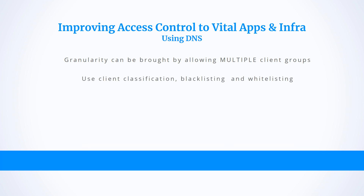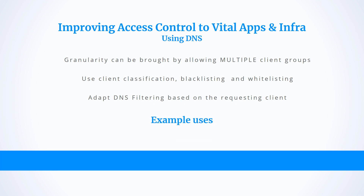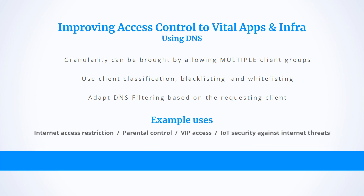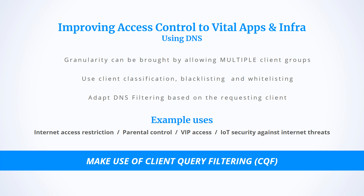Efficient IP DNS enables this micro-segmentation by allowing multiple client groups. It makes use of client classification, deny lists, and allow lists, so DNS filtering can be adapted according to the requesting client — opening up exciting new use cases like internet access restriction, parental control, VIP access, and IoT security. We call this client query filtering.